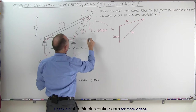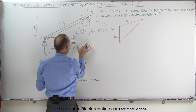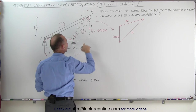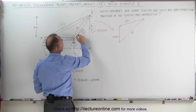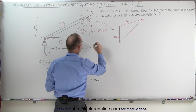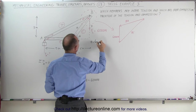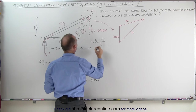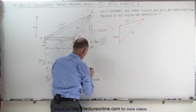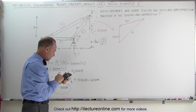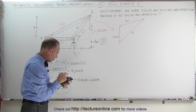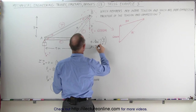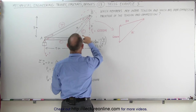First of all, we can find these angles. Notice if this is 6 meters and this is 8 meters, then this must be 10 meters because we have a 3-4-5 triangle. We can then find this angle here — let's call it theta. Theta is equal to the arctangent of the opposite divided by the adjacent, which is 8 divided by 6. Theta equals 53.13 degrees.